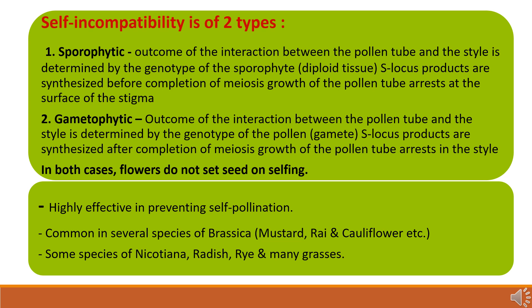Self-incompatibility is highly effective in preventing self-pollination and is used in hybrid seed production in species of Brassica like mustard, rye, and cauliflower, and in some species of Nicotiana, radish, rye, and other grasses.